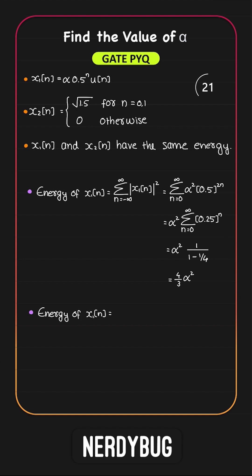Let's find the energy of the second signal now. We need to take the summation of square of the signal where n can take values from minus infinity to infinity. But the signal is 0 for all values of n other than 0 and 1.